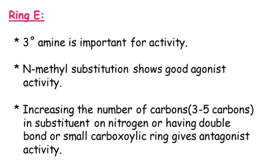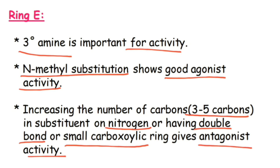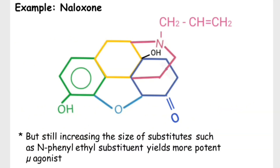Let us see what modifications could be made in Ring E. A tertiary amine is important for activity; N-methyl substitution shows good agonist activity. Increasing the number of carbons — up to 3–5 carbons in the substituent on nitrogen — or having a double bond or small carbocyclic ring gives antagonist activity. The best example is Naloxone, which has a 3-carbon substituent on nitrogen and also contains a double bond, thus showing antagonist activity.